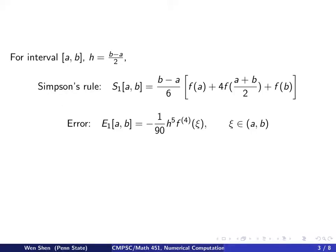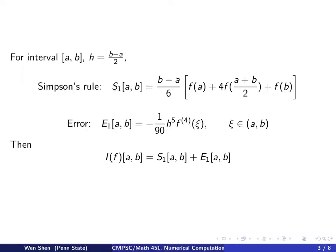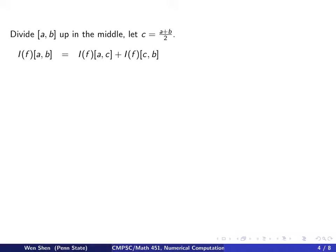The basic error analysis at this local level gives negative (1/90) h^5 times the fourth derivative of f evaluated at some ξ, where ξ lies on the interval between a and b. Since we do not know the exact location of ξ, we do not know the error exactly — this is just an estimate. We have the identity that the integral equals the Simpson's rule S1 plus its error. Now we divide the interval [a, b] into two equal subintervals with midpoint c = (a + b)/2. The integral of f from a to b equals the integral from a to c plus the integral from c to b.